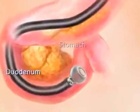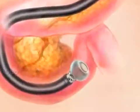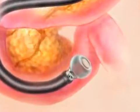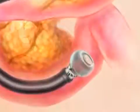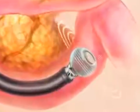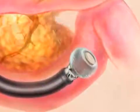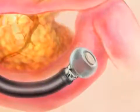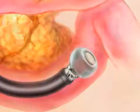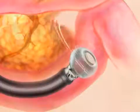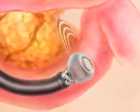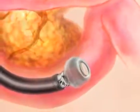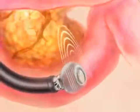The tip of the endoscope contains a miniature ultrasound probe. Ultrasound waves pass from the probe through the lining of the duodenum or stomach, generating detailed images of the entire pancreas and pancreatic duct.